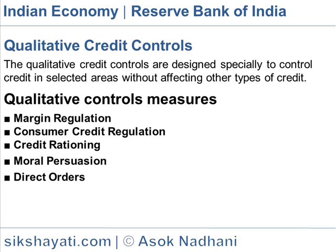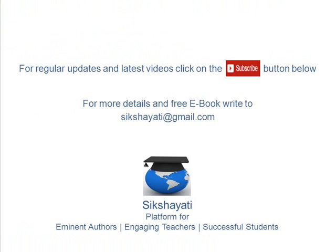Direct Orders: The Reserve Bank can, under the Banking Companies Act, prohibit particular types of loans, give advice on lending policy, and compel changes in the board of directors of any bank. Thank you for watching the video.